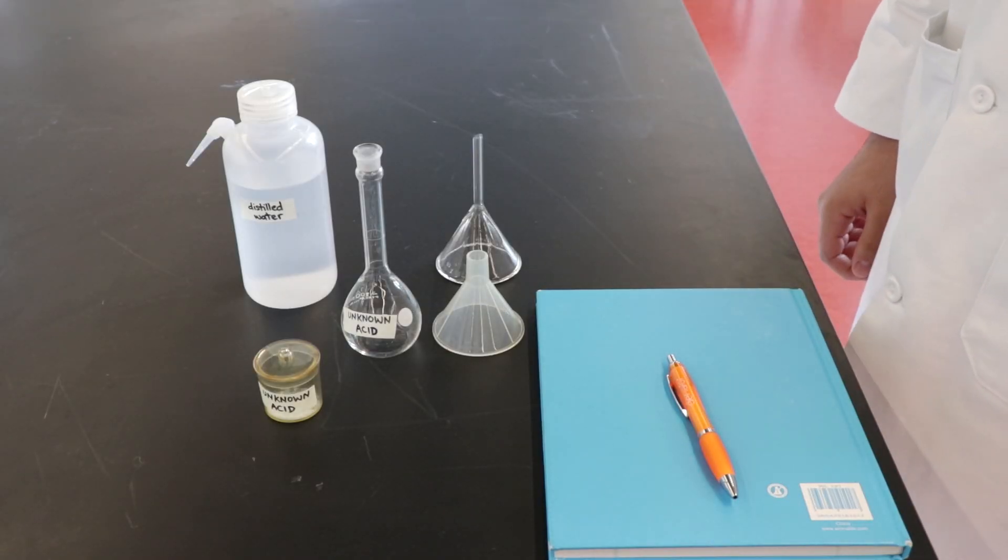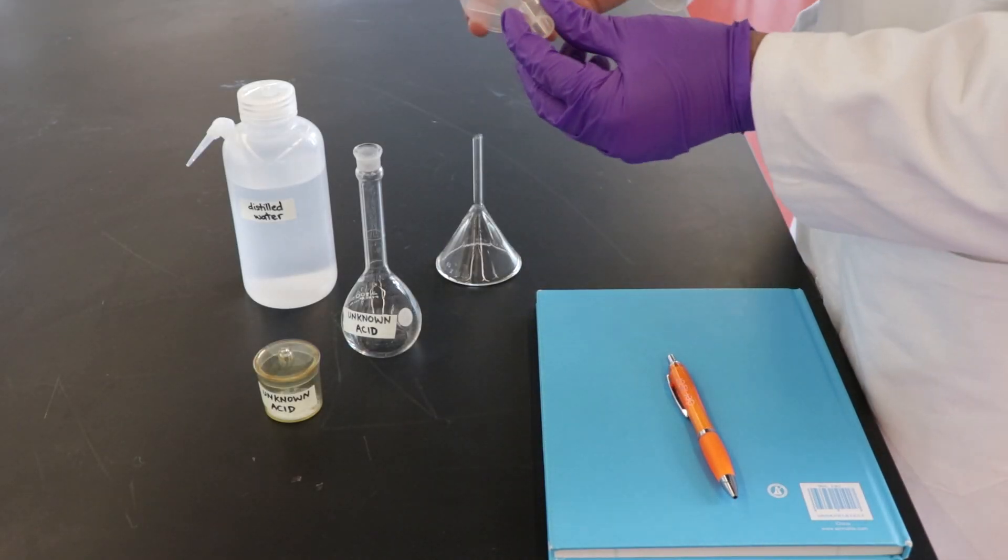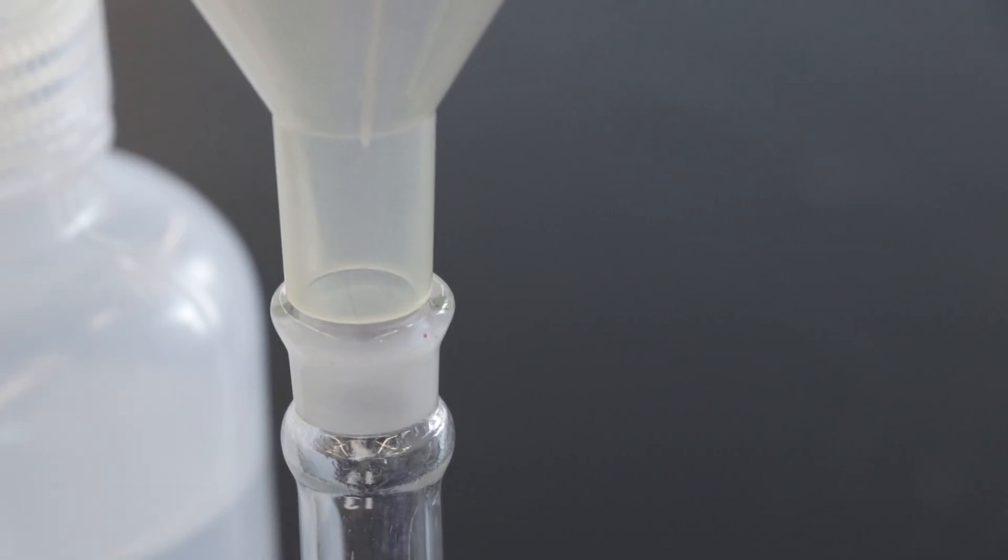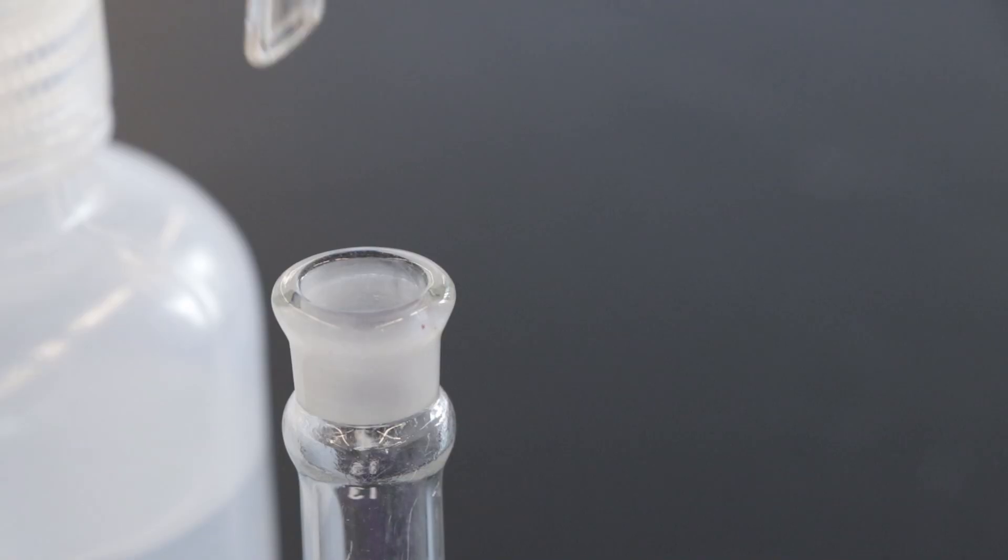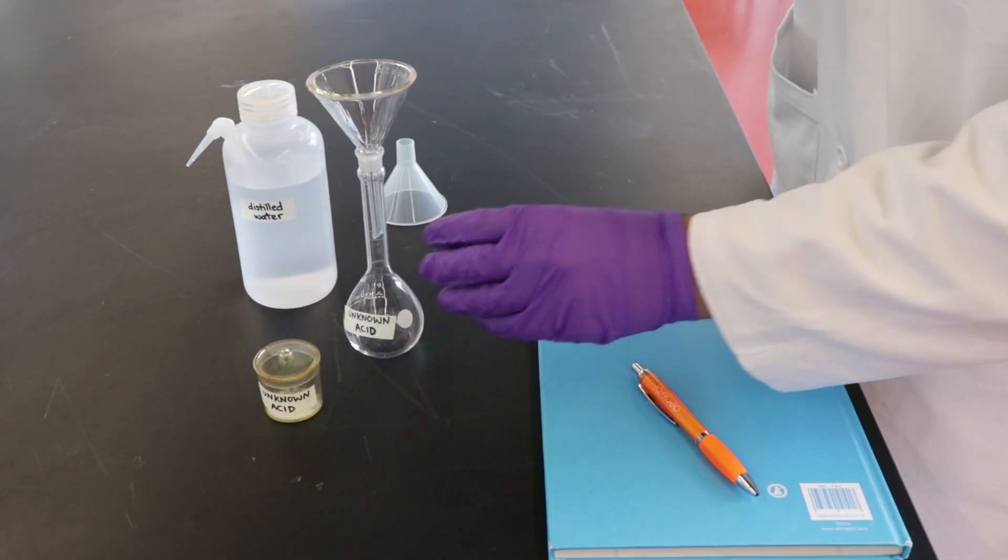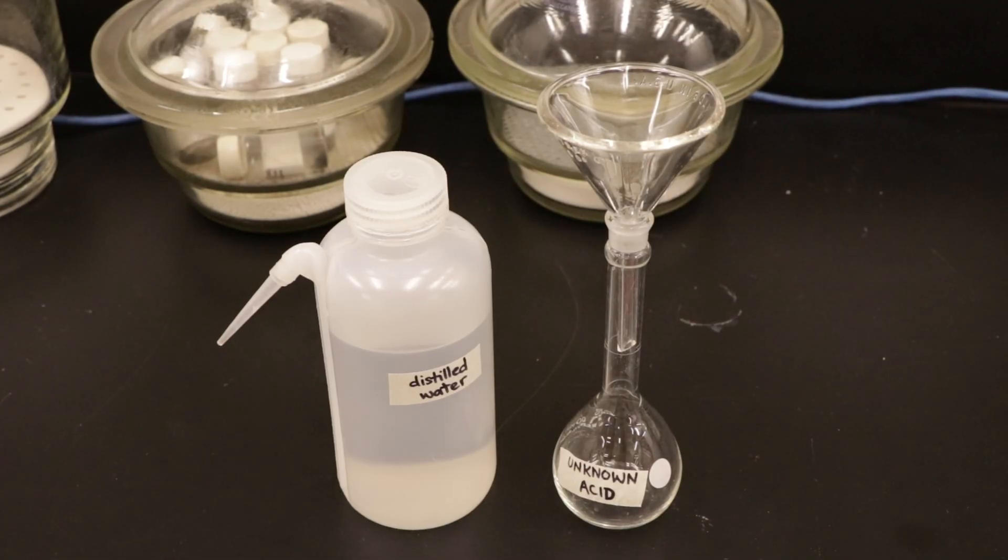This is the equipment you will need to bring with you to the analytical balance room. You may use a short stem funnel if the powder funnel in your drawer does not fit your volumetric flask. In the analytical balance room, place the volumetric flask, funnel, and wash bottle on the counter opposite to the analytical balances.